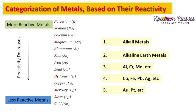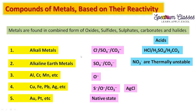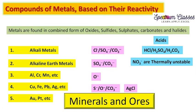Before going to the types of salts, let me summarize the categorization of metals based on their reactivity. Metals are categorized into five different categories. Alkali metals are very reactive and form chlorides, sulfates, and carbonates, which are soluble. Alkaline earth metals form sulfates and carbonates, which are insoluble. Aluminium, chromium, and manganese form oxides and hydroxides. Copper, iron, lead, silver, and mercury form sulfides, which are insoluble. Based on this solubility, basic radicals are grouped into different groups.